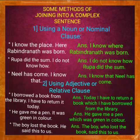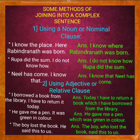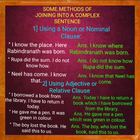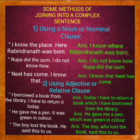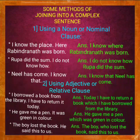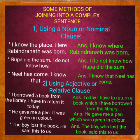Next example — 'The boy lost the book' and 'He said this to us.' If I join them into a complex sentence using a relative or adjective clause, the answer will be: 'The boy who lost the book said this to us.' Here, 'the boy said this to us' is the independent clause and 'who lost the book' is the subordinate adjective or relative clause. The relative pronoun is 'who' and the antecedent is 'the boy' — 'who' refers to the boy.